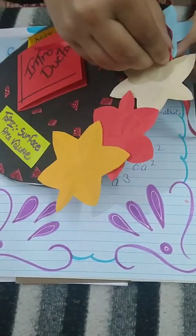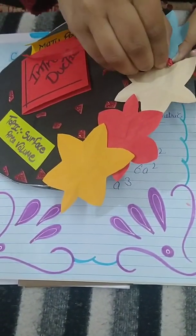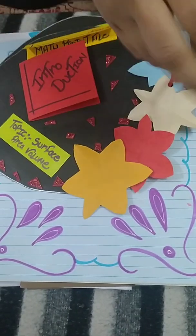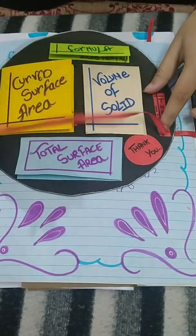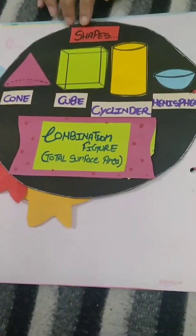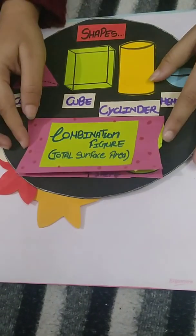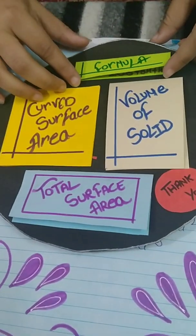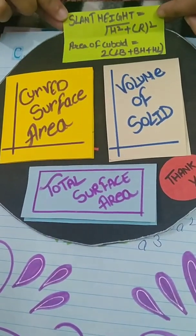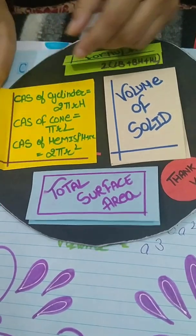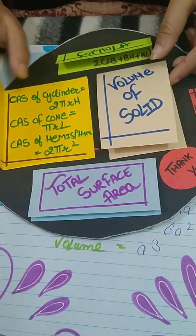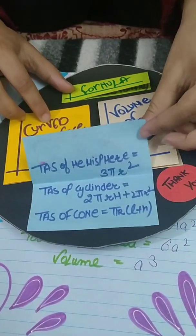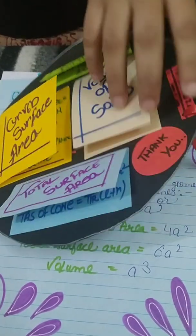I think that's a very new idea for all of you to make your file more creative. This section shows picture shapes, combinations, figures, and formulas — curve surface area, volume of solid, total surface area, and how to enclose it.